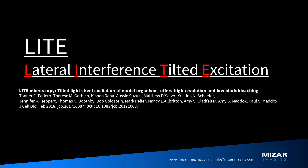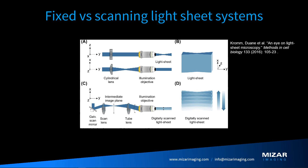The technology behind the TILT was developed in Paul Maddox's lab at UNC Chapel Hill, and it's called LITE, which stands for Lateral Interference Tilted Excitation. There are two different ways you could form a light sheet: a cylindrical lens-based system, where you take a laser, expand it, pass it through a cylindrical lens, and the lens focuses in one axis but not the other, creating a sheet of light; or a galvo scanning-based system, where you create a single beam and scan it through the sample to effectively create the sheet.